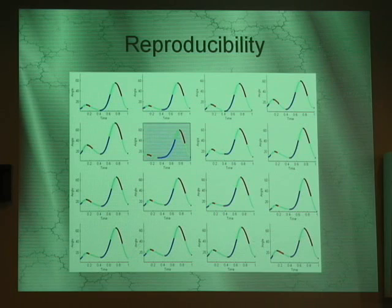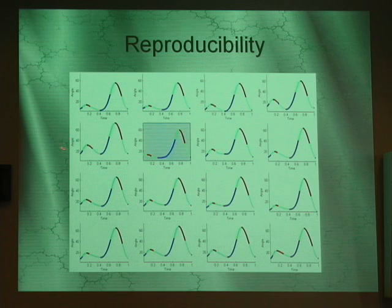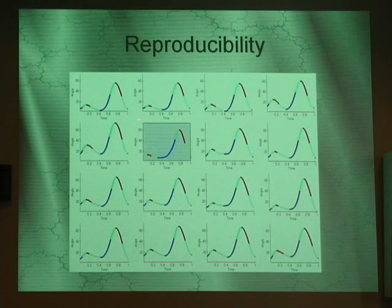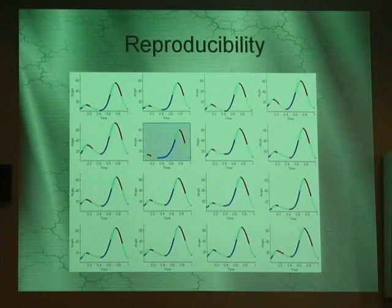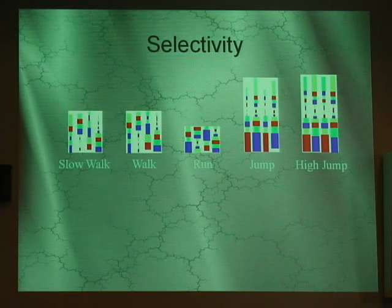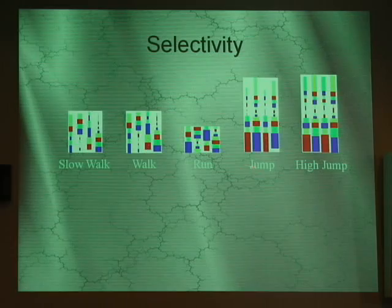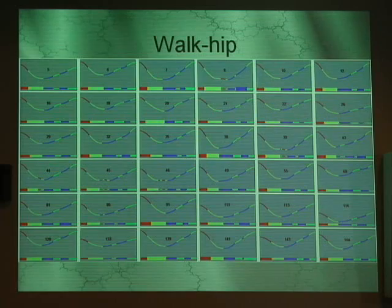This representation has interesting properties, like reproducibility. This is a database from NIH — these are walkers. You can see that the sequence of phonemes for a given joint, over time, is the same across different people — except for one quick walker. You also need selectivity properties: the walk should be different from run, and different from jump.